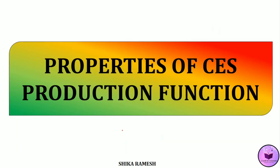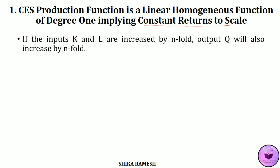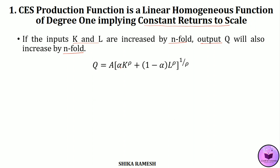Now let's look at the properties of CES production function. The first property is that CES production function is a linear homogeneous function of degree 1, implying constant returns to scale. This means that if all inputs are increased by n-fold, then output will also increase by n-fold. We have already seen that a production function with constant elasticity of substitution and constant returns to scale can be represented as Q = A × (α·K^ρ + (1−α)·L^ρ)^(1/ρ).